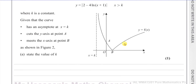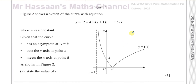I've just taken a copy of that sketch and put it down here so we can see what's happening. It says where k is a constant, given that the curve has an asymptote at x equals k, cuts the y-axis at the point A.